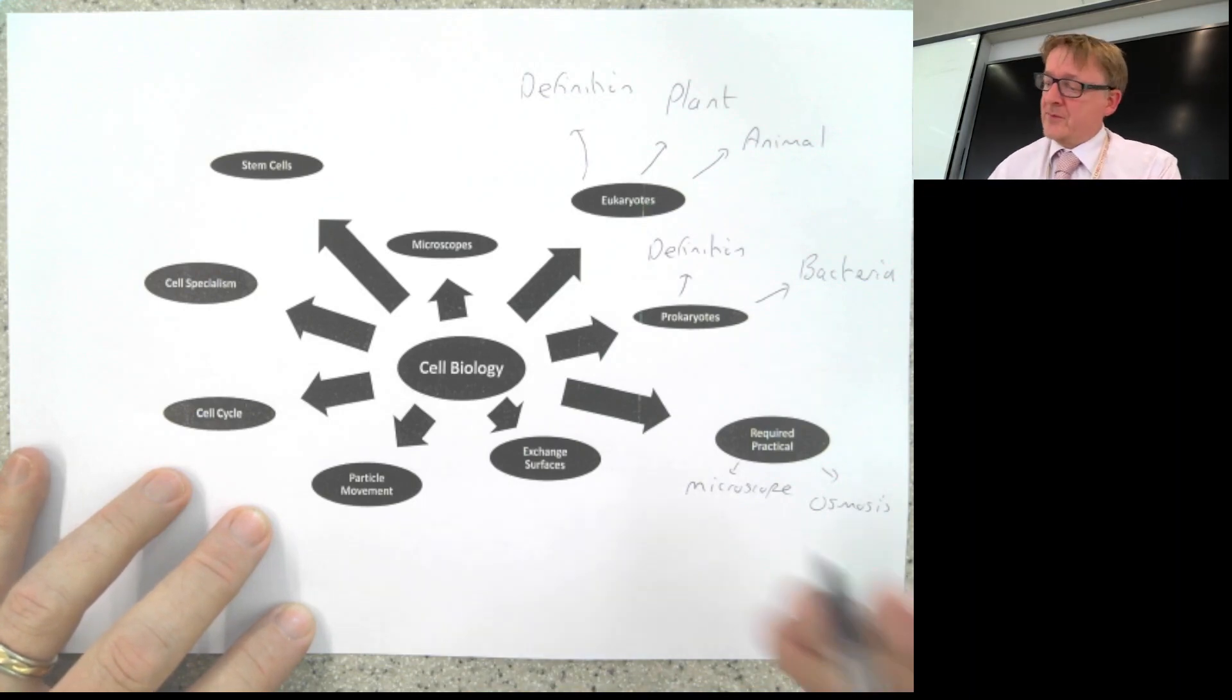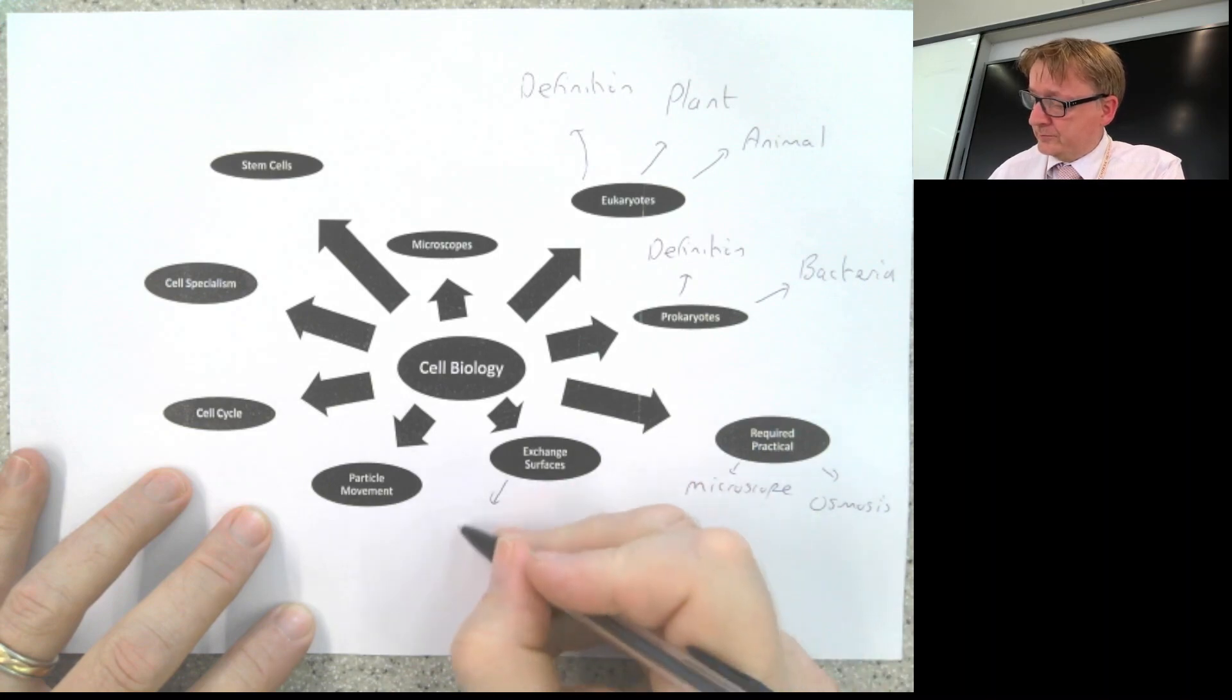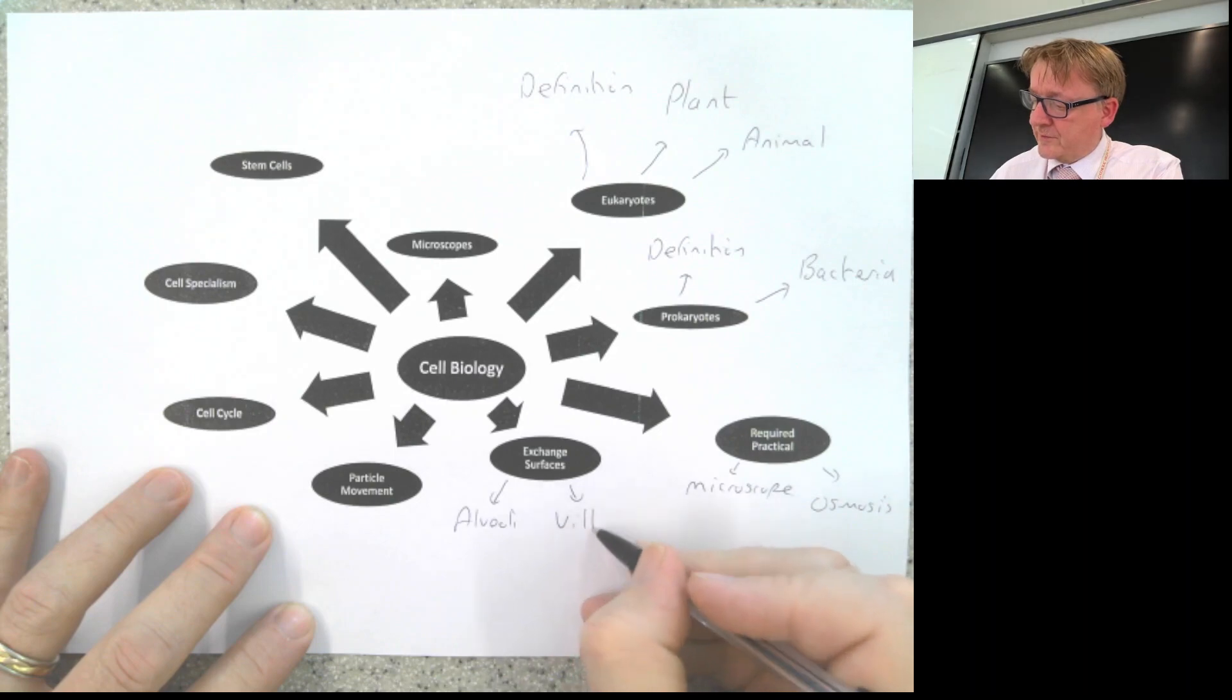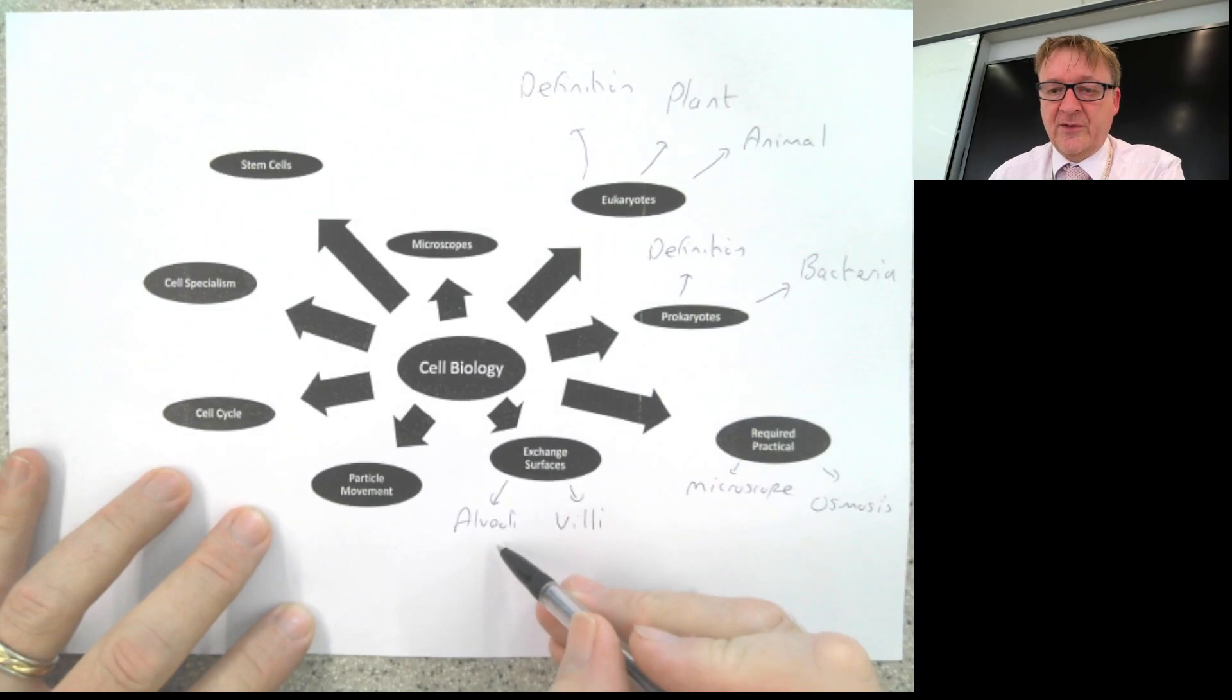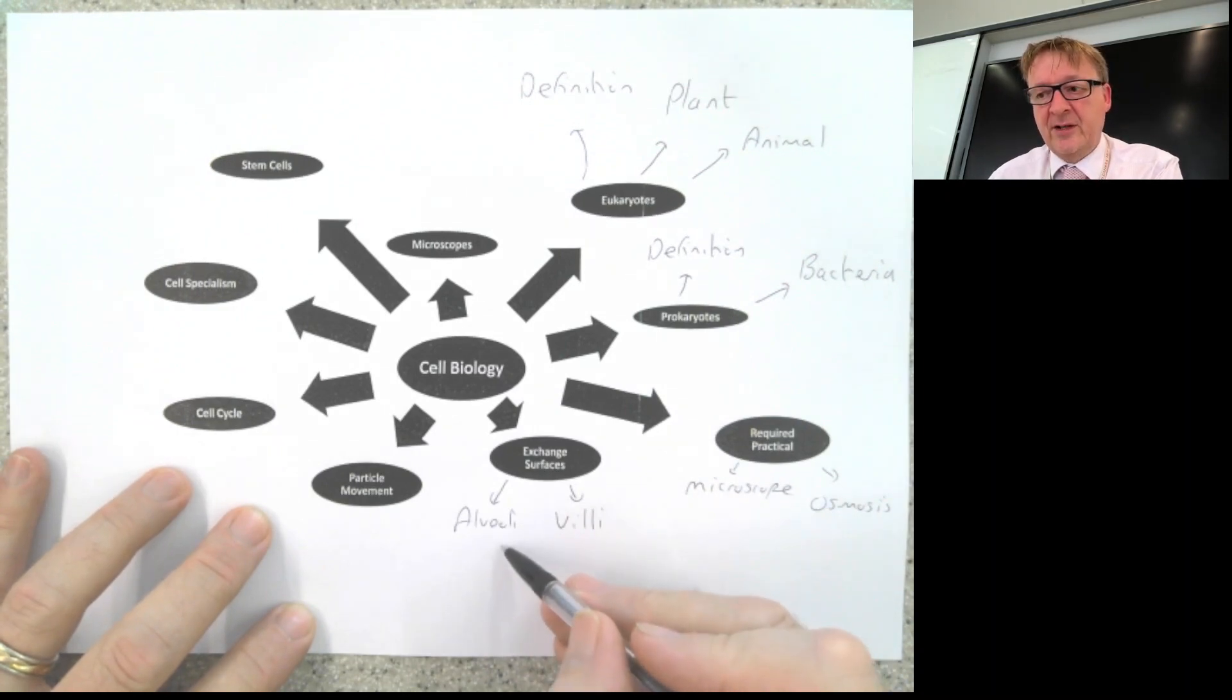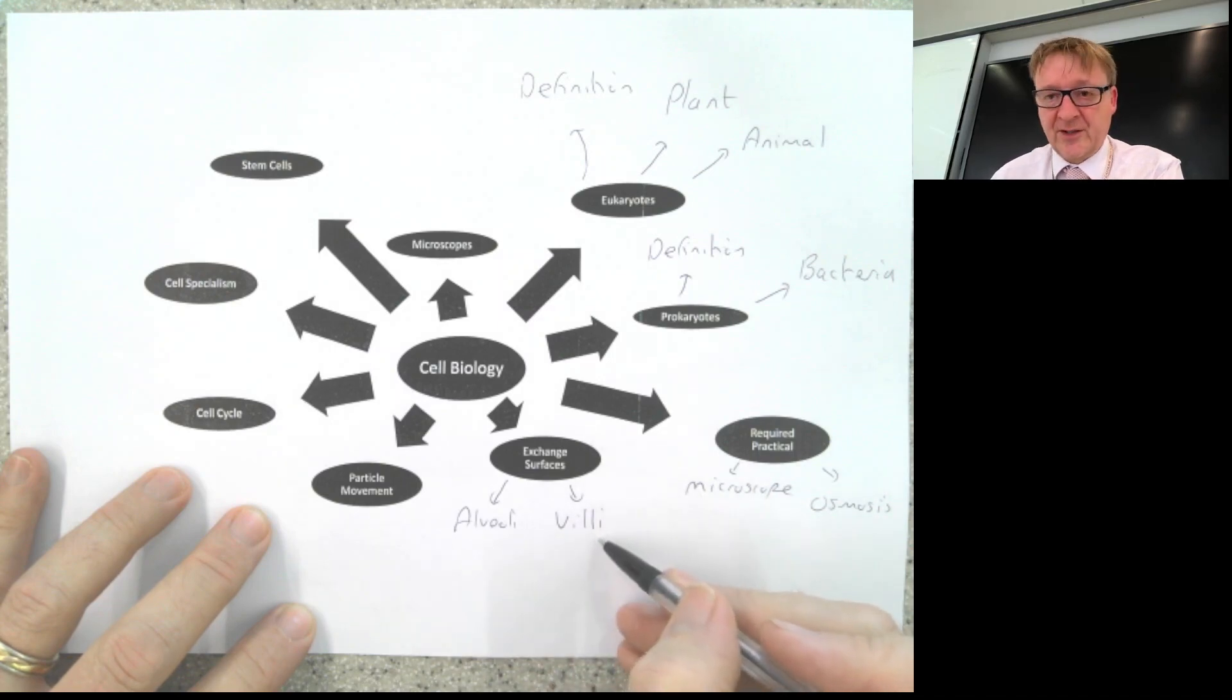Exchange surfaces are where things can pass across a membrane or from one surface to another. The first example is alveoli, and the second is villi. They have the same characteristics: good blood supply, large surface area, and short diffusion distance, which means the membrane is probably one cell thick. The villi have exactly the same.